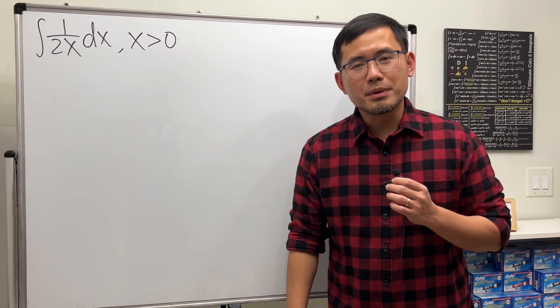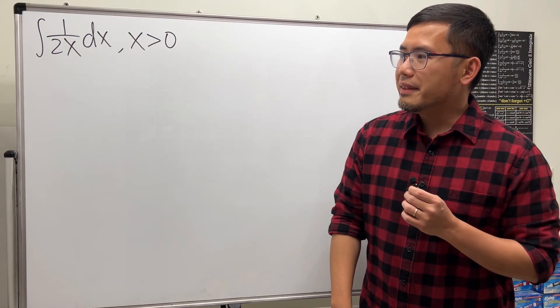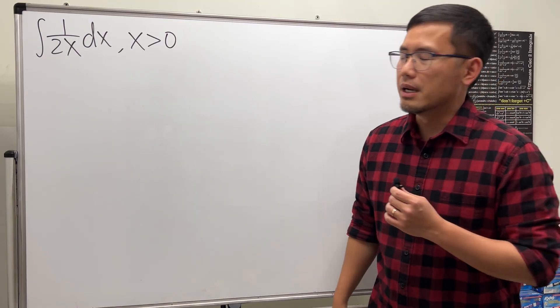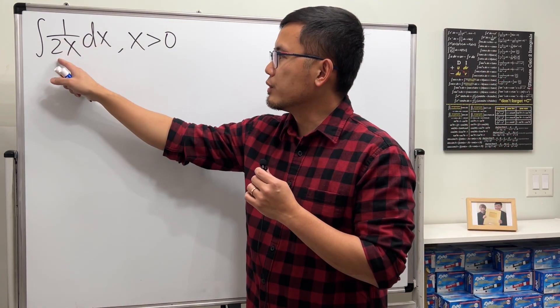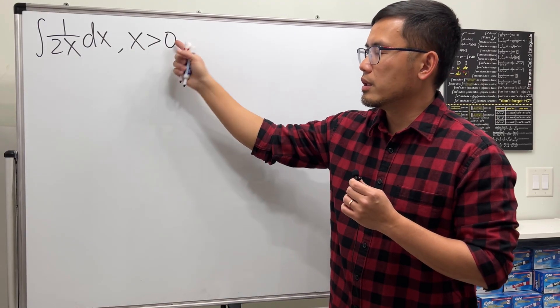This is exactly what I'm teaching in my Calculus 1 class, so let's go over this. We are going to find an anti-derivative for 1/(2x), and that's pretty much the same as finding the indefinite integral of 1/(2x), and we also have the condition that x is greater than zero.